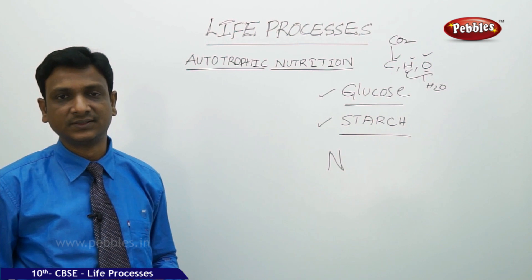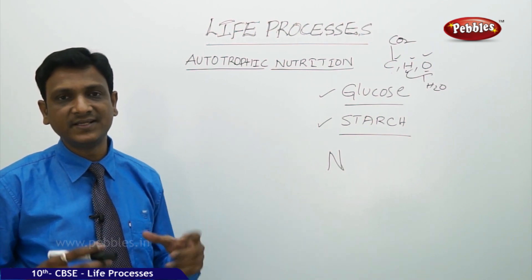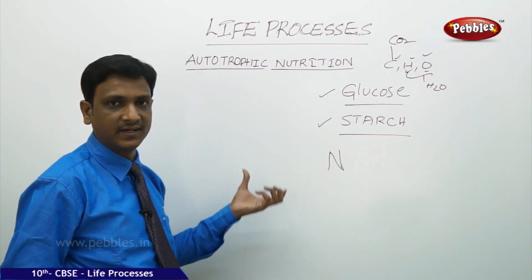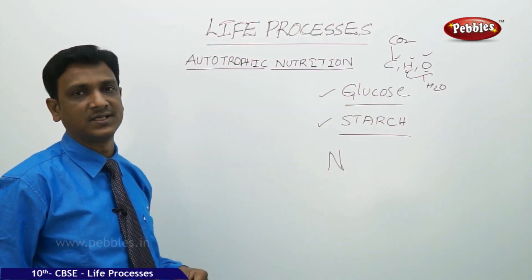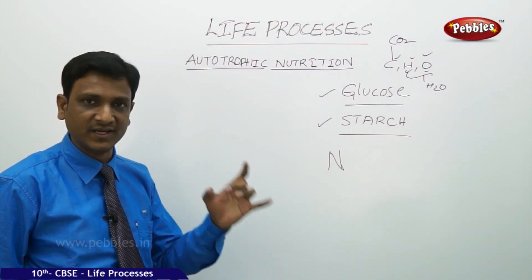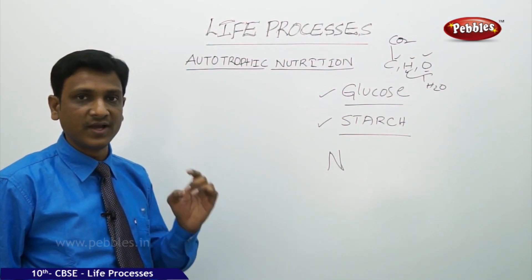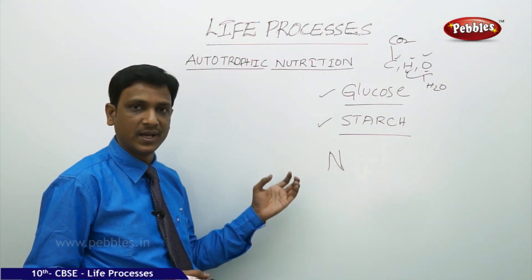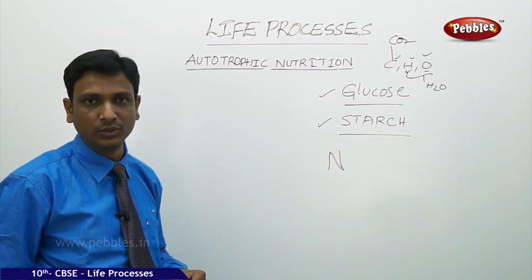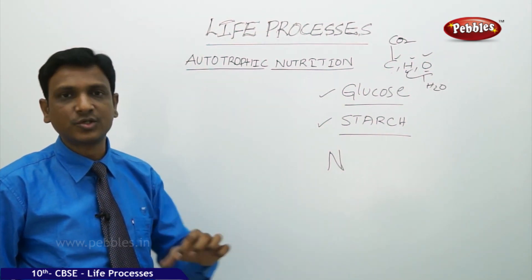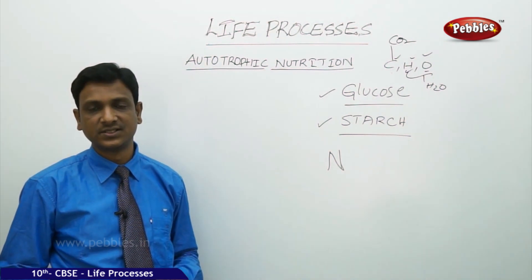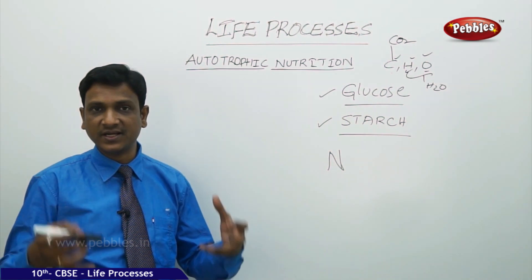Plants get water from the soil through their roots and carbon dioxide from the air through stomata. Plants also get nitrogen, phosphorus, sulfur, zinc, and other mineral salts from the soil, which are required for the formation of new molecules like proteins, amino acids, and vitamins needed to make new cells for growth.